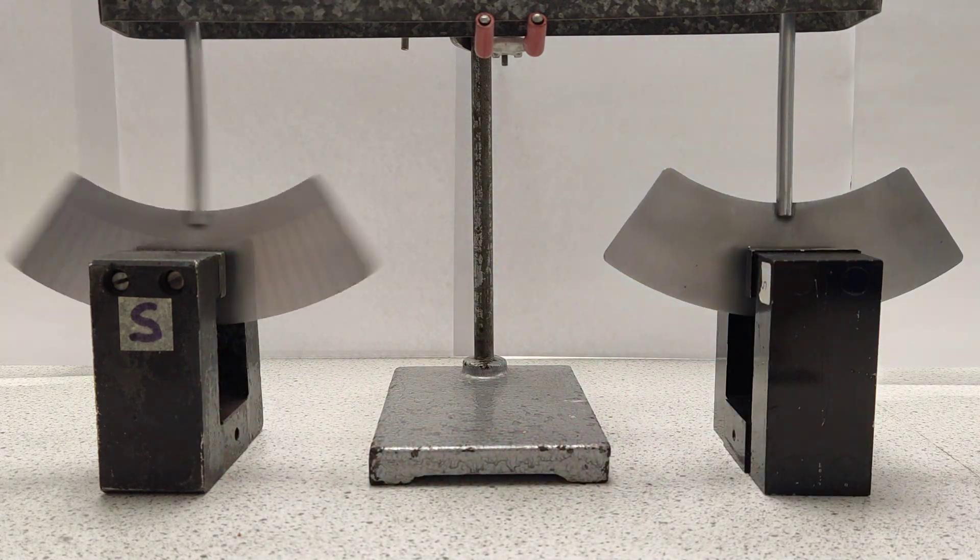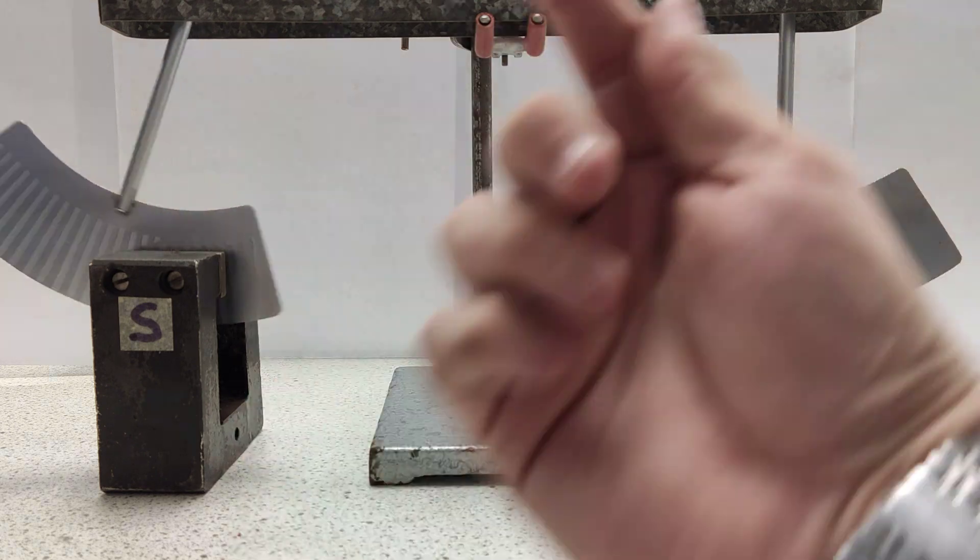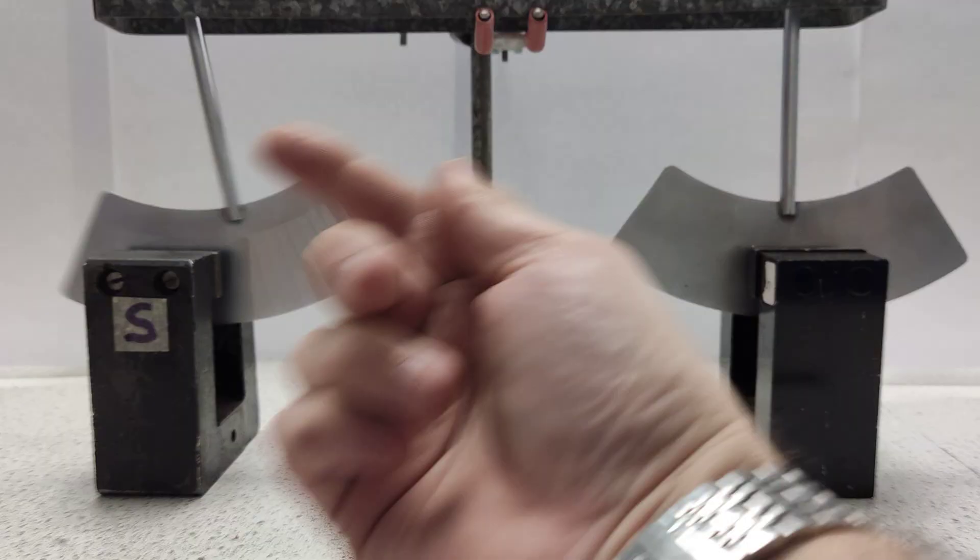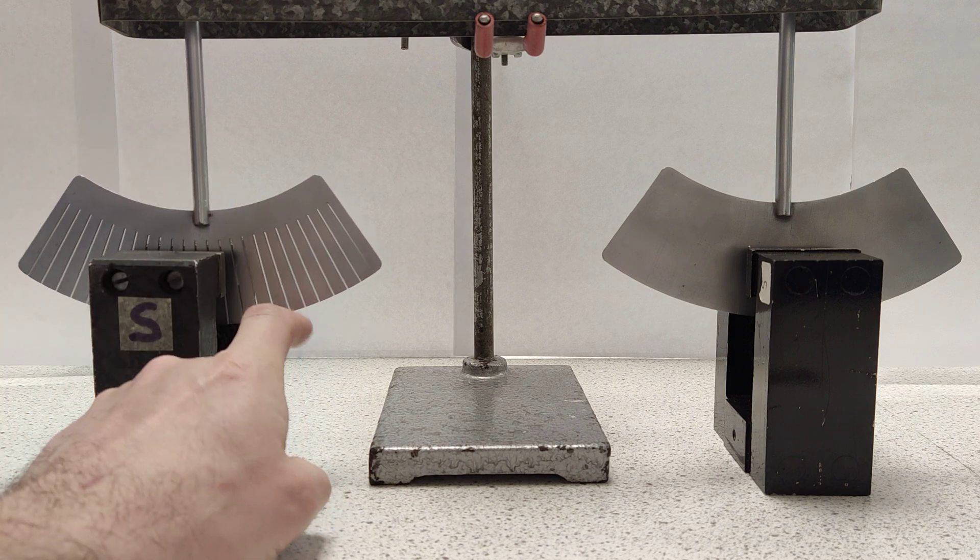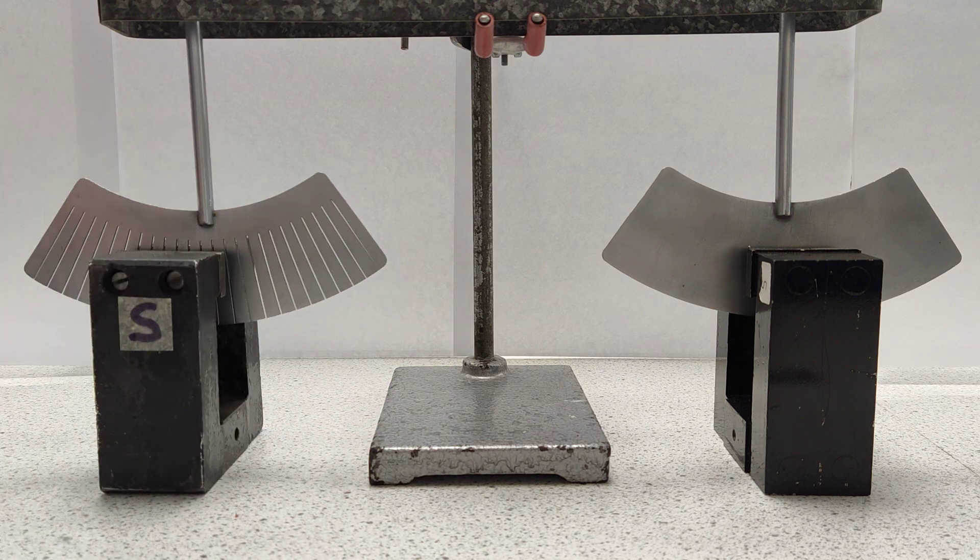In this one the eddy currents are smaller because if they're generating in a circular direction, the little slits stop the current from building up to be a big current.